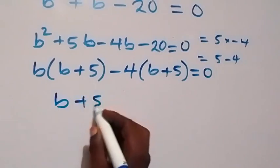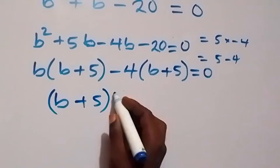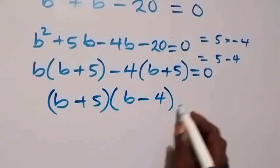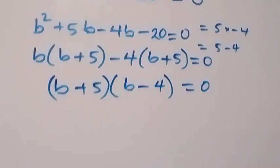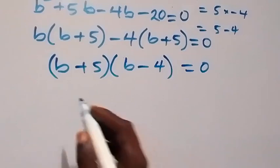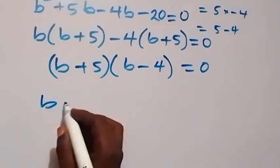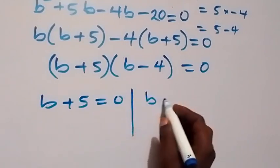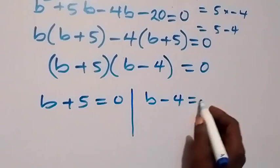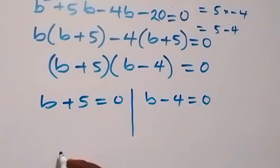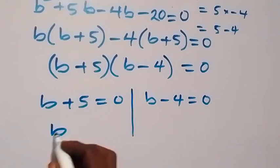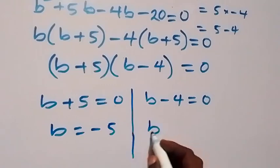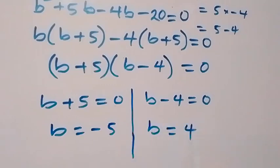Factoring out b plus 5 as common, we get b plus 5, times b minus 4, equals 0. The two cases are: b plus 5 equals 0, giving b equals minus 5, or b minus 4 equals 0, giving b equals 4.